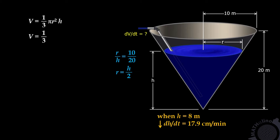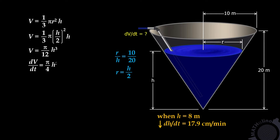The volume is equal to one-third times pi times (h/2) squared times h. One-half squared is one-fourth, times one-third is one over twelve, times pi. Therefore, volume equals pi over 12 times h cubed. Let us differentiate both sides with respect to time. We have dV/dt equals pi over 4 times h squared times dh/dt. We are required to find dV/dt when the depth is 8 meters.